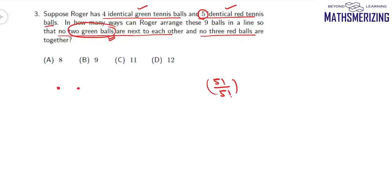So I have arranged these red balls one, two, three, four and five. When I've placed these five red balls, I have these six gaps. If I'll place these green balls in either of these six gaps, then no two green balls will be together.